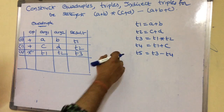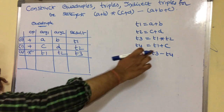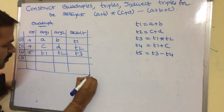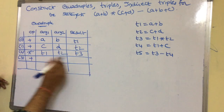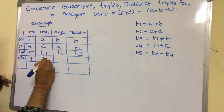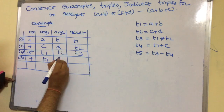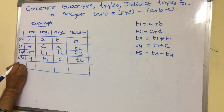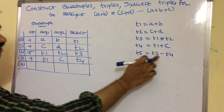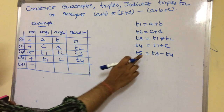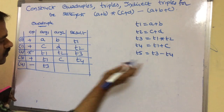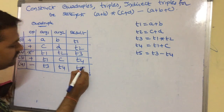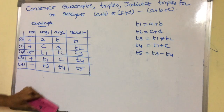Next, t4 is equal to t1 plus c, stored at address 3. The operation is plus, argument 1 is t1, argument 2 is c, and the result is stored at t4. The last instruction is at address 4: operation is minus, argument 1 is t3, argument 2 is t4, and the result is stored at t5. This is the quadruple representation.